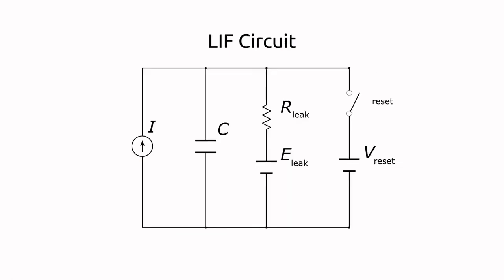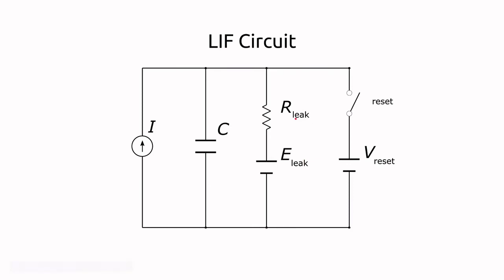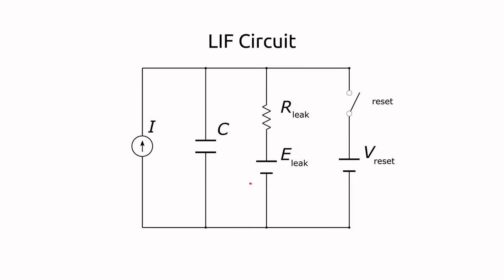If we go back to the LIF circuit, we can ask how to integrate knowledge of ion channels into this model. Previously, we've used a battery and a resistor to model the leak current, which modeled current when the membrane potential differed from the equilibrium potential, trying to return the voltage across the capacitor — representing the membrane — back toward the resting or equilibrium potential E_leak. So if we want to model ion currents, we can follow this technique and add ion currents to our model by adding parallel branches that have some resistivity and then a resting potential, which would be the reversal potential for the ion channels.